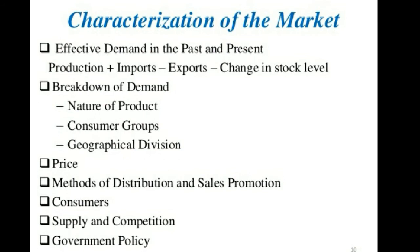The second characteristic of the market is breakdown of demand. To make analysis easier, demand is broken down into three major criteria: nature of the product, consumer groups, and geographical division. Based on nature of the product, one general product name is divided into many different products. For example, commercial vehicle demand is divided into demand for trucks and demand for buses, and even based on various capacities of buses and trucks, the demand is further subdivided.